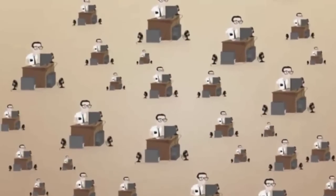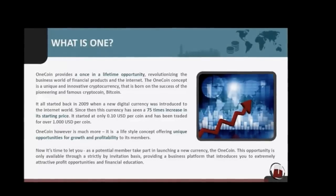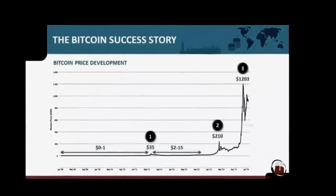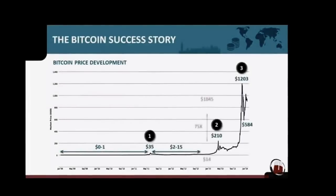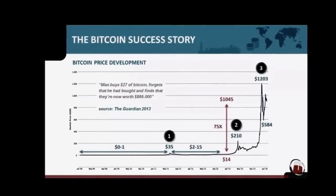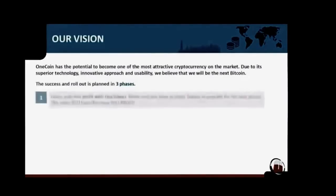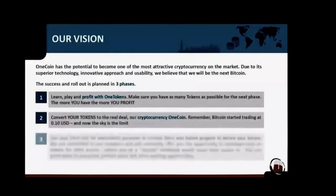More and more people are mining digital currencies every day. OneCoin provides a once-in-a-lifetime opportunity. OneCoin is a cryptocurrency born from the success of bitcoin. It all started back in 2009 when bitcoin got introduced and traded at 10 cents per coin. Since then it has been trading at over one thousand dollars per coin, increasing in value more than 75 times since its introduction.